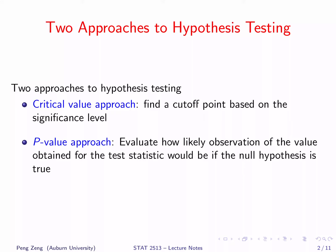The second one is the p-value approach. It calculates a probability to evaluate how likely observation of the value obtained for the test statistic would be if the null hypothesis is true. Both approaches are important and commonly used, and you need to understand both.